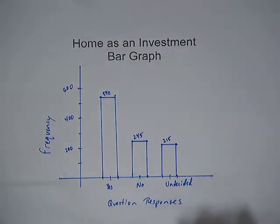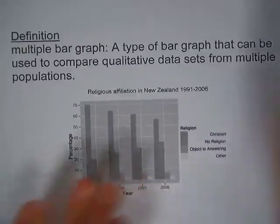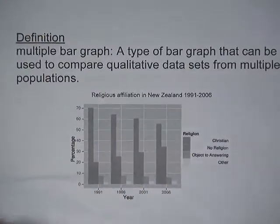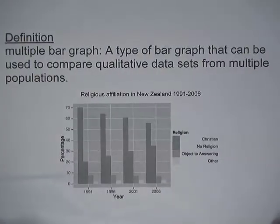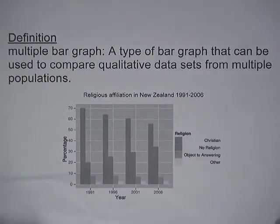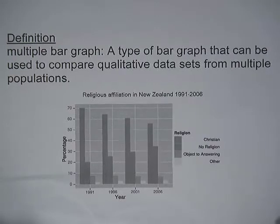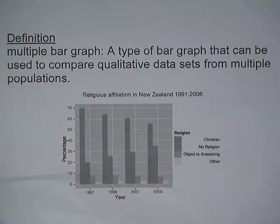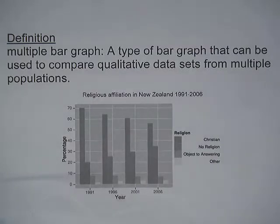That's an example of how to draw a bar graph. Another common graph is called a multiple bar graph. A multiple bar graph is a type of bar graph that can be used to compare qualitative data sets from multiple populations.